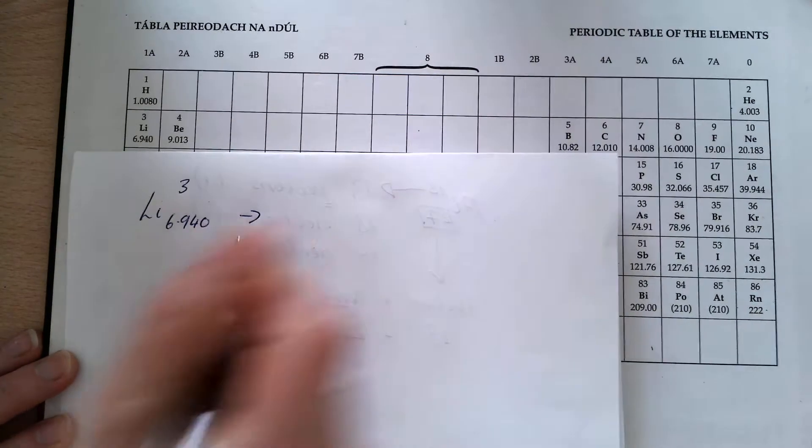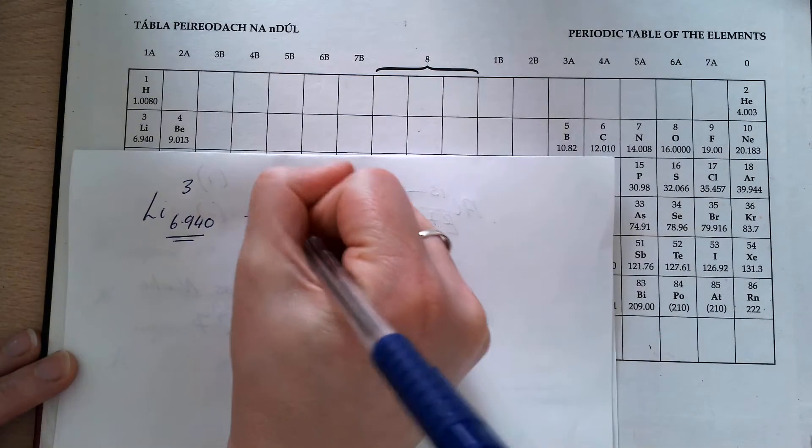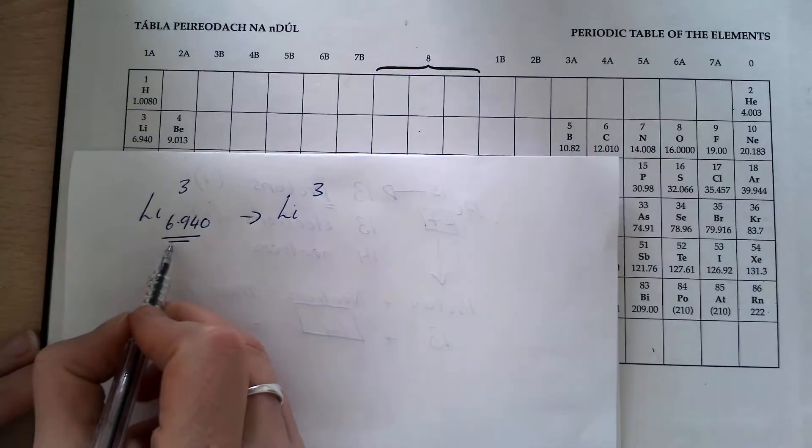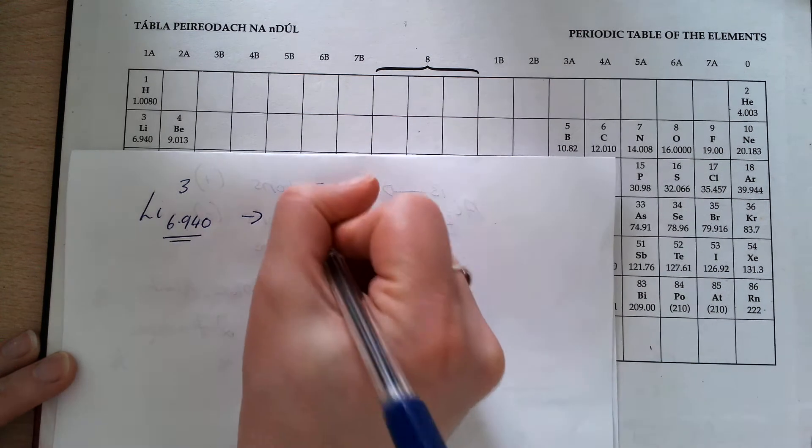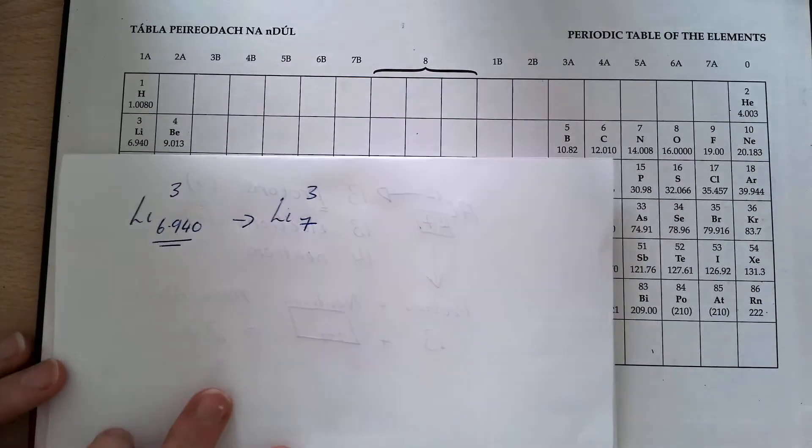So the first thing I'm going to do is look at this. It's lithium, and I have to round this up. The number after the decimal point is greater than 0.5, so that's going to be 7.